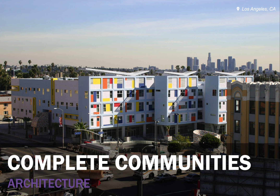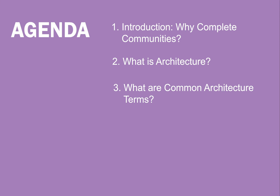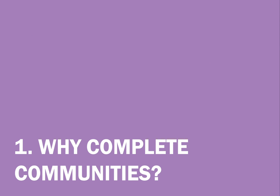This presentation defines and describes architecture — in simple terms, a building on public or private land with a specific program or use. First, it defines complete communities. Next, it defines architecture and common architectural terms, the context for architecture, and sustainability. We consider why these subjects matter and how good architecture results in good outcomes for people in complete communities. Finally, we look at the role architecture can play in community change over time.